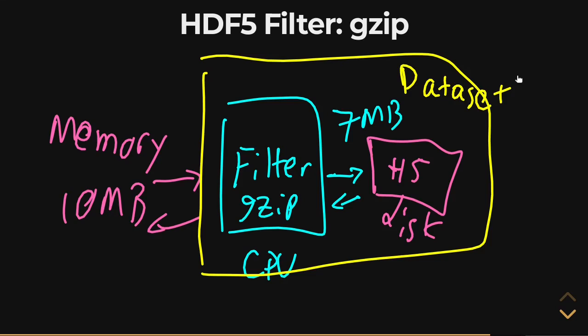You just define it and attach this filter upon dataset creation and you're good to go. Every single time you read or write from the dataset from that time, from creation onwards, it will always pass through this GZIP filter.